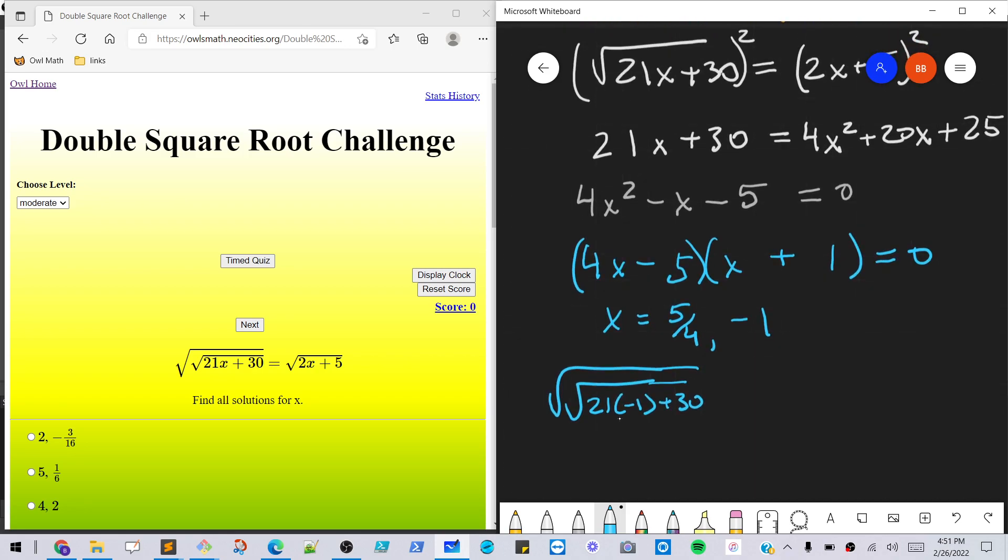That's gonna be, this whole thing's gonna be 9. The square root of 9 is 3, and the square root of the square root of 9 is the square root of 3. And then the other side, the square root of 2 times negative 1 plus 5, that's also gonna be the square root of 3. So that solution's good.